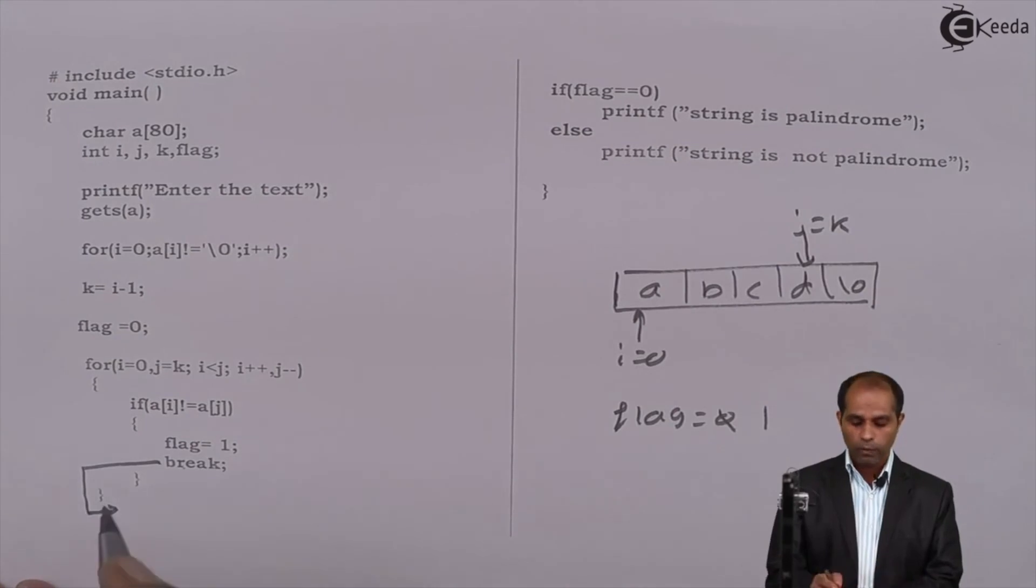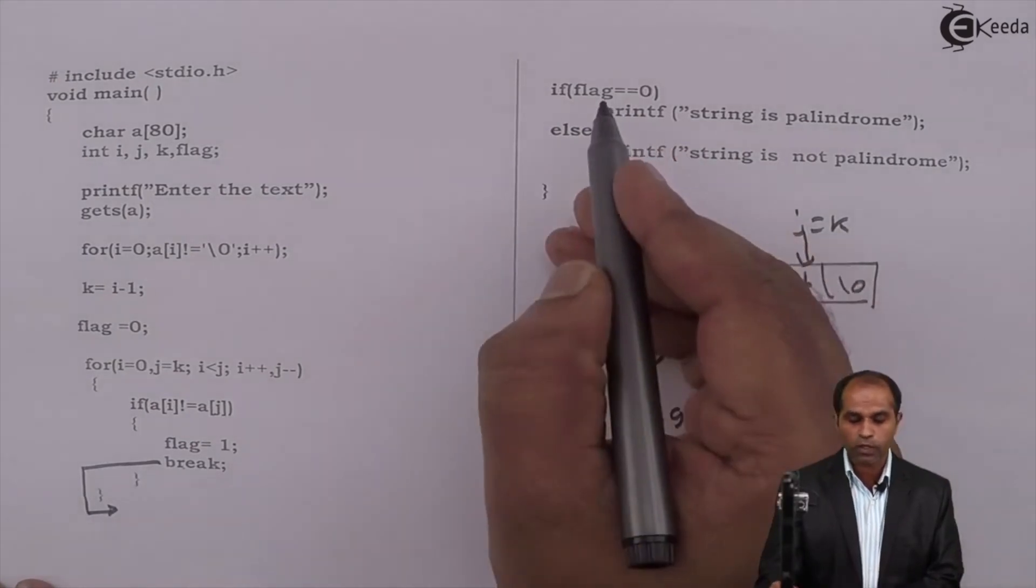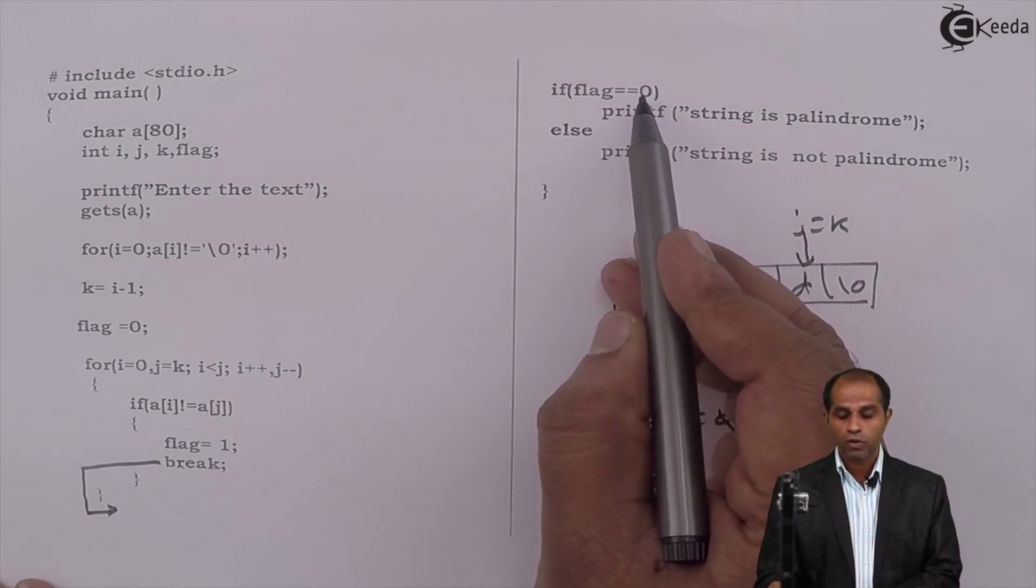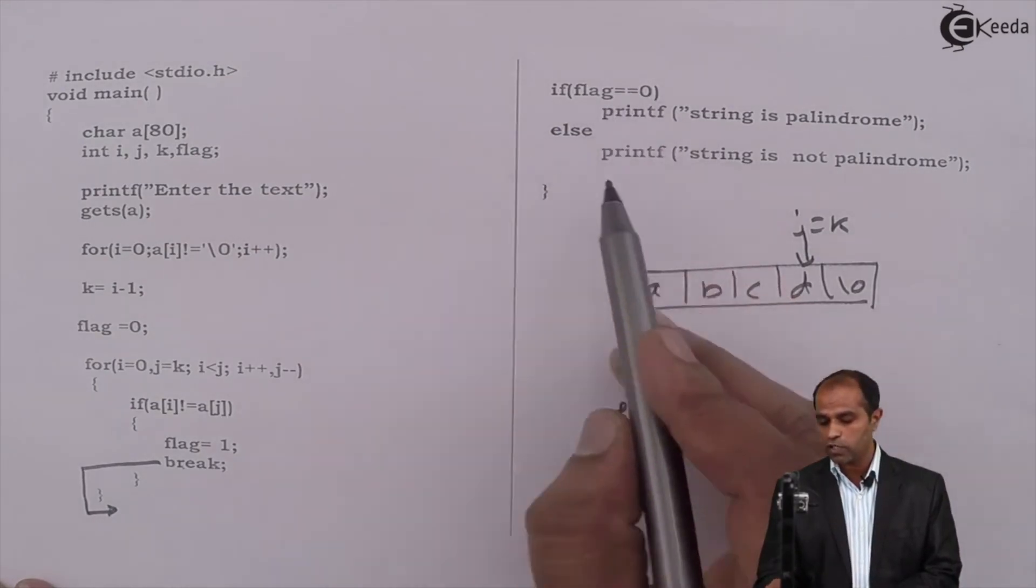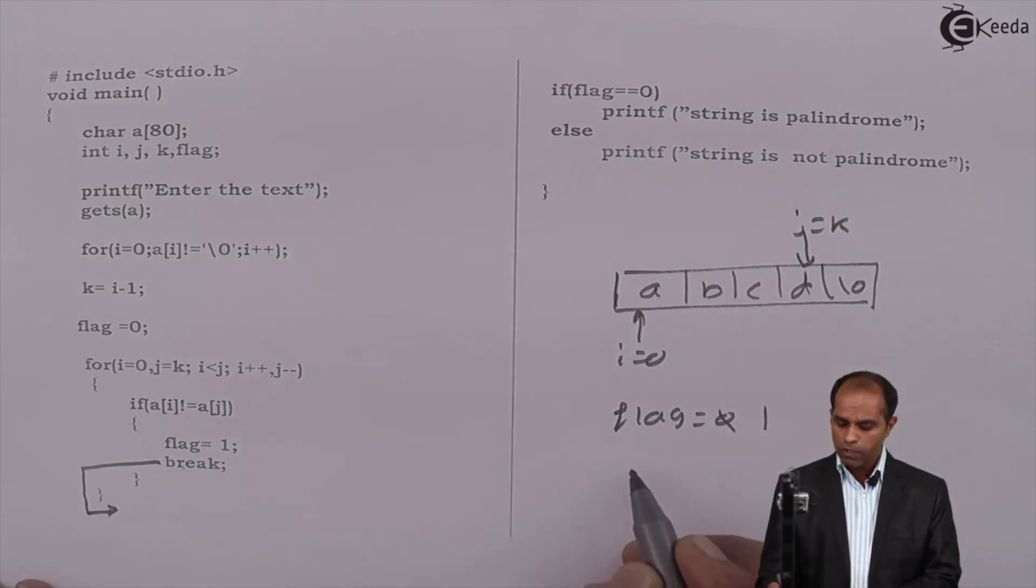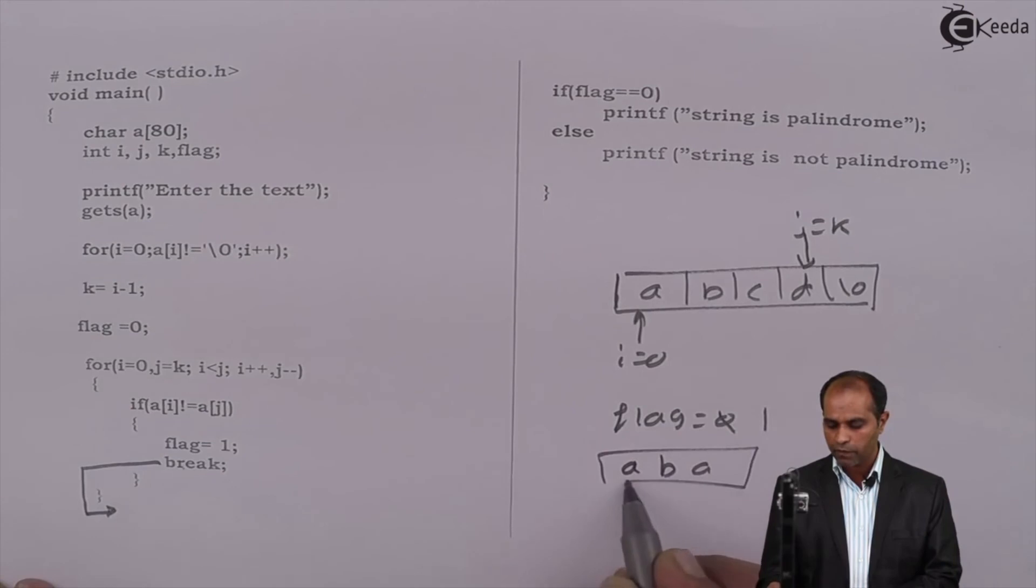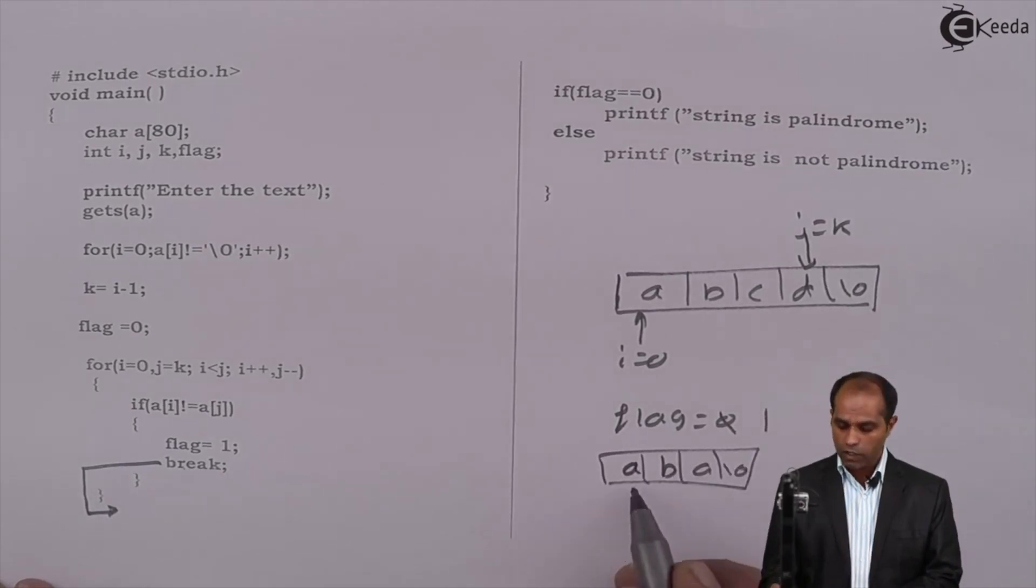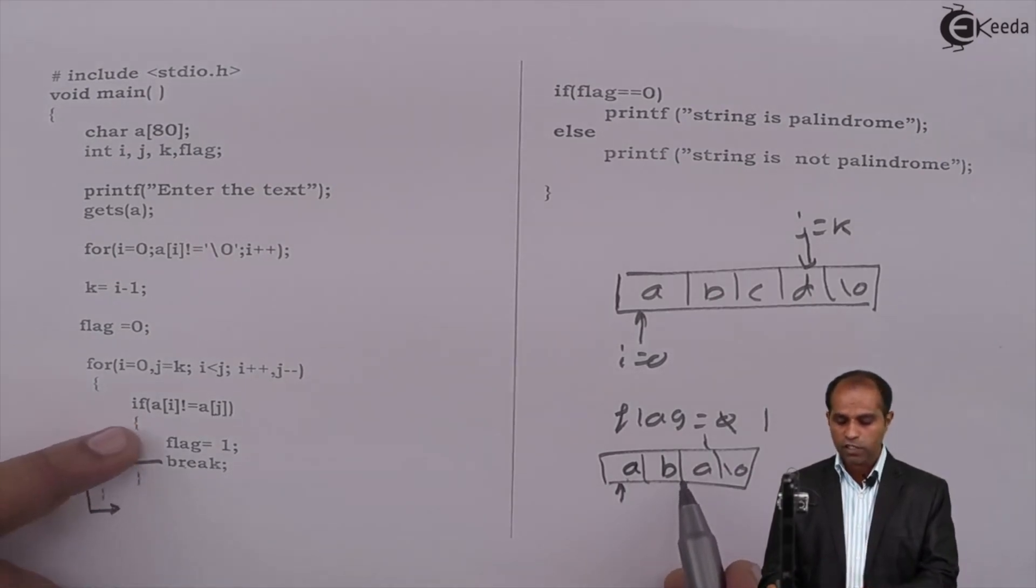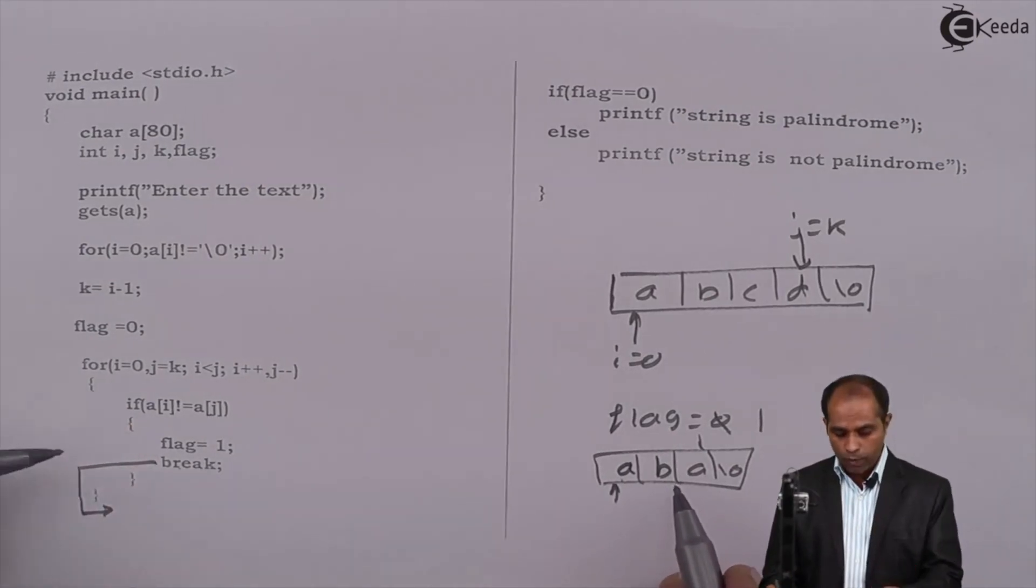When break takes you outside this particular for loop, check this flag. Flag is 1. 1 == 0? Yes, false. False, and hence it says 'string is not palindrome'. Suppose if I say a, b, a - this is the string. Now see, here i and k are at this place. a[i] not equals to a[j]? False, false, and don't do this operation.